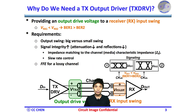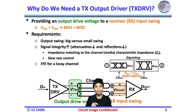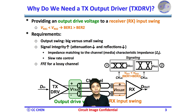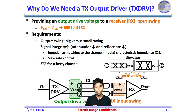After knowing what and where the driver is, why do we need it? The transmitter output driver provides an output driver voltage to a receiver Rx input swing. Since the Rx input swing's high level is determined as a logic one and the low level is determined as a logic zero, a high input swing of the Rx would likely make the right decision between the one and zero. Therefore, if the Rx swing one is less than Rx swing two, then the BER one would be higher than BER two. Because of the BER requirements, we must need a TX output buffer to provide good signal swings for the Rx input.